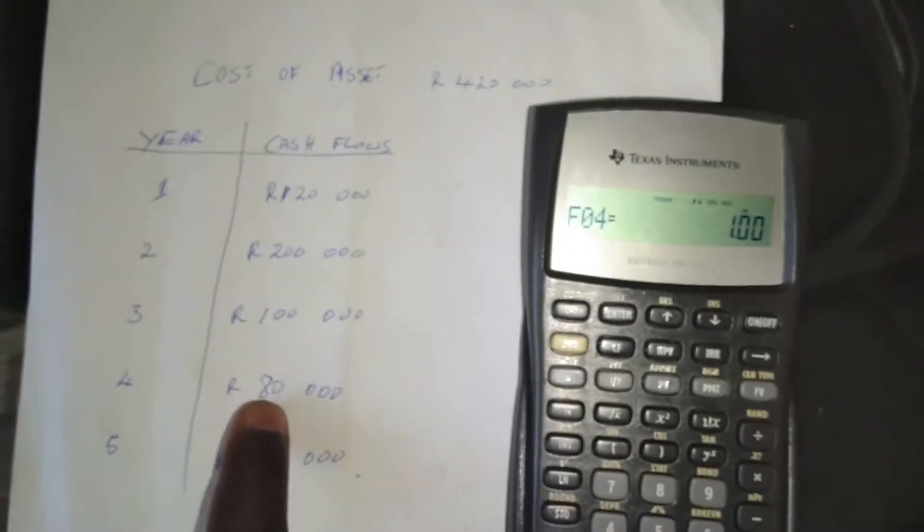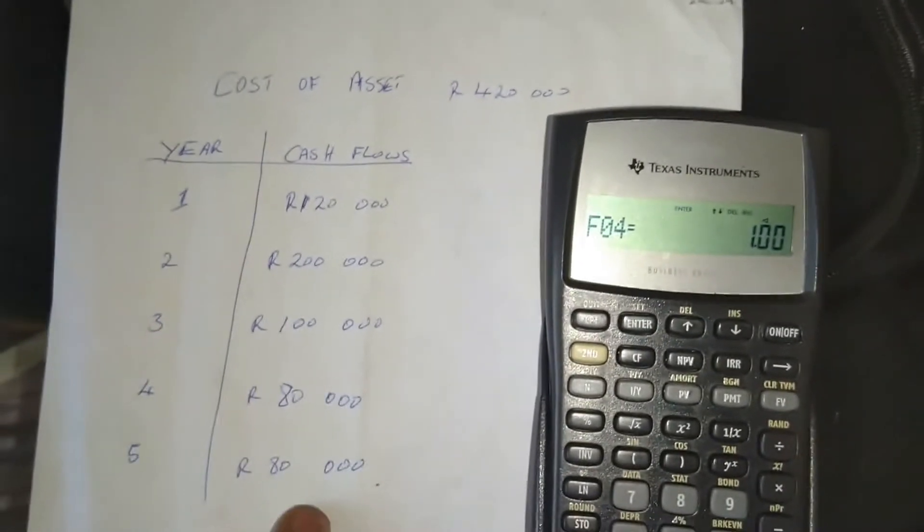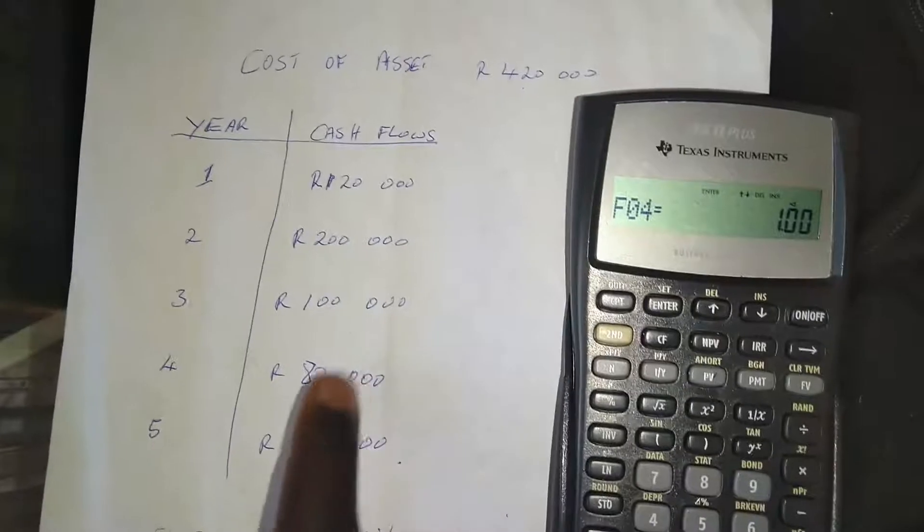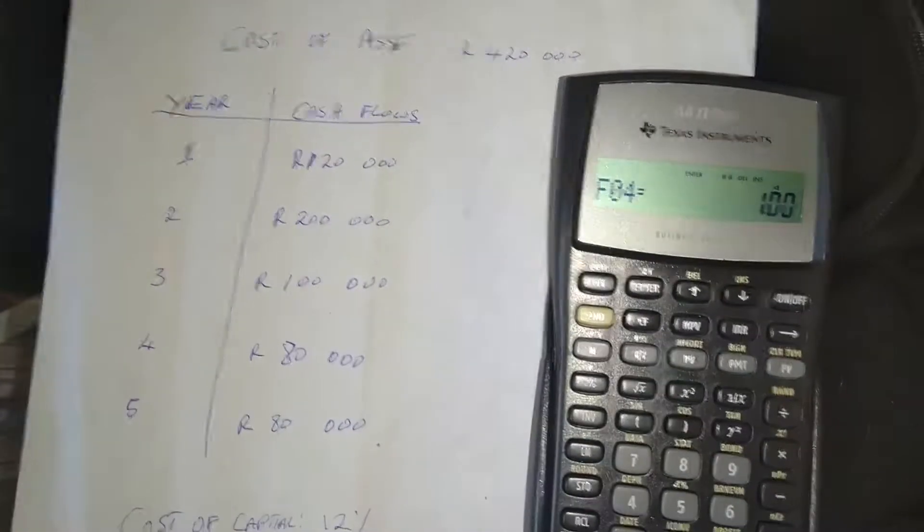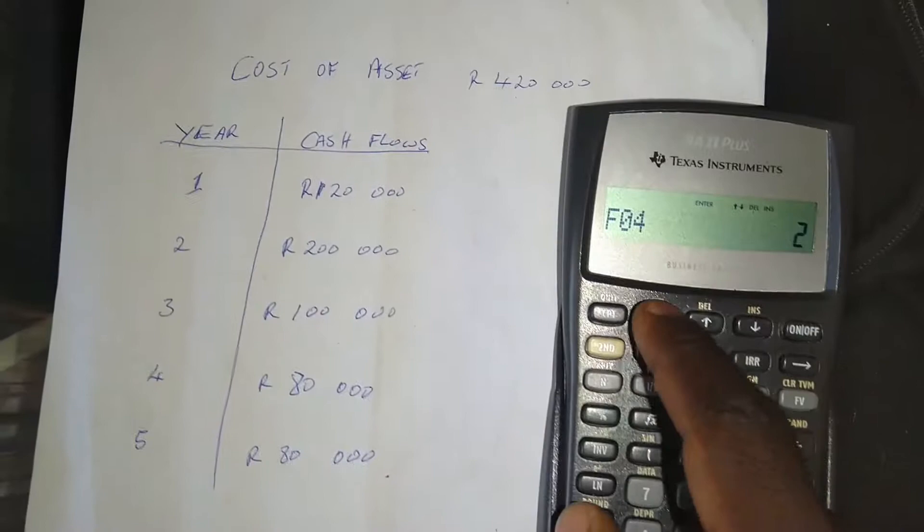And then we press the down arrow. Now frequency of cash flow. If you can see here, after year four, the cash flow for year five is exactly the same. So the 80,000 rand occurs twice in a row. So we press two. And then we press enter.